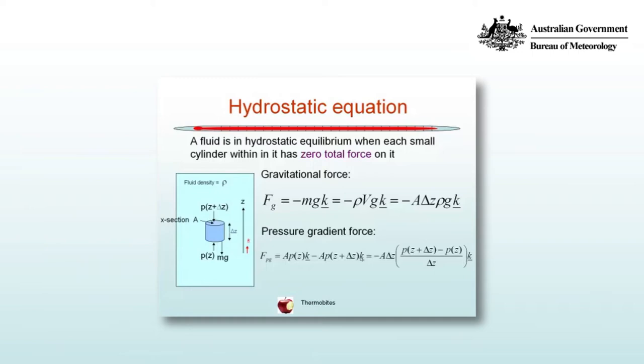The pressure gradient force is the difference between the pressure force A times p at the bottom of the cylinder minus A times p at the top. The pressure at the bottom is p(z) and at the top is p(z + delta z), giving us Ak minus A(z + delta z)k.